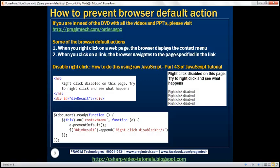Let's see how to disable some of these browser default actions. First, let's look at disabling right-click. We discussed how to do this using raw JavaScript in part 43 of JavaScript Tutorial. In this video, we'll discuss how to do the same using jQuery.